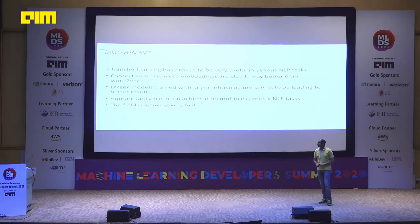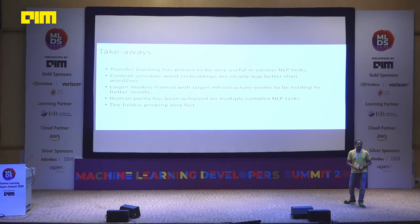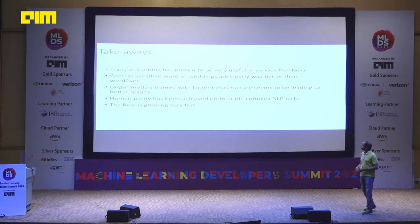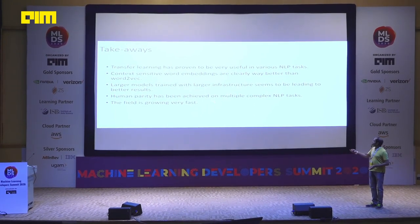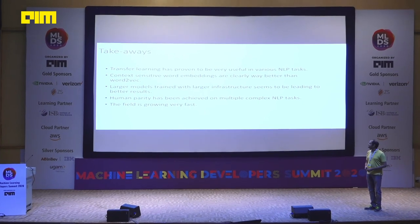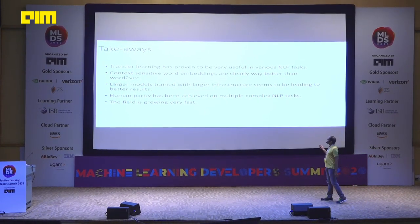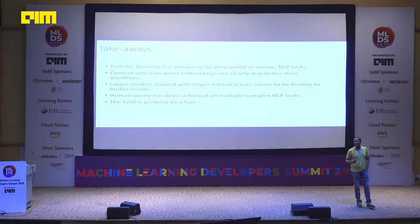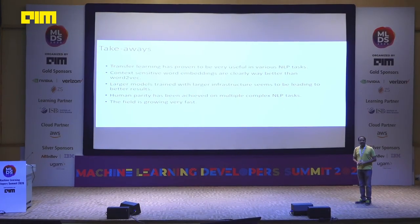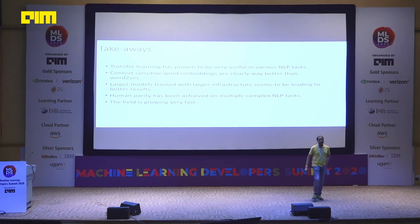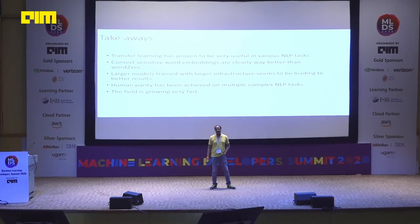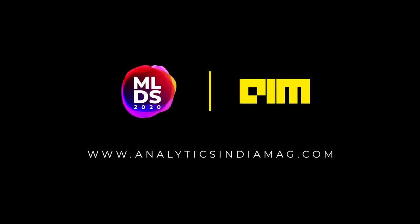Key takeaways: transfer learning is very useful in NLP tasks. Context-sensitive word embeddings are clearly better than Word2Vec. Attention is important. Larger models and larger infrastructure seem to give better results as of now. Human parity has already been achieved on many NLP tasks. The field is growing very fast — if you want to invest time in reading up something, this is the area. Thank you.